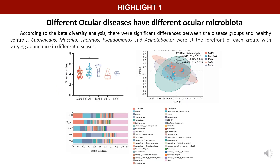By analyzing the microbiota data according to alpha and beta diversity analysis, there were significant differences between the disease groups and healthy controls. The common bacterial genera were found with varying abundance in different diseases.